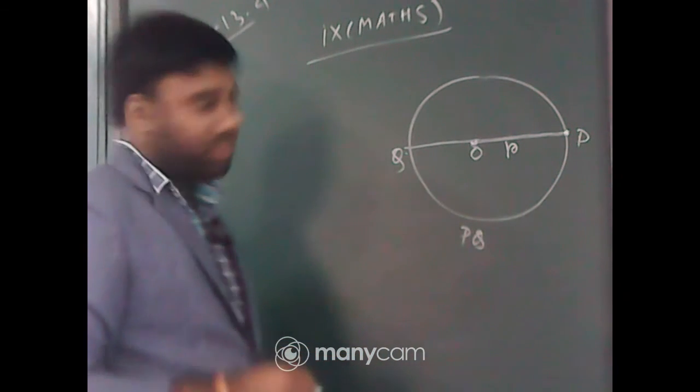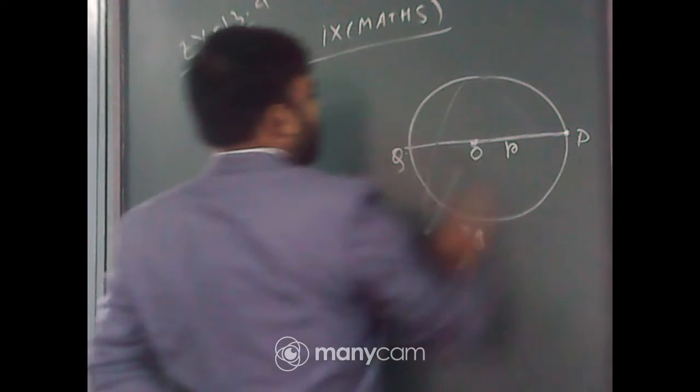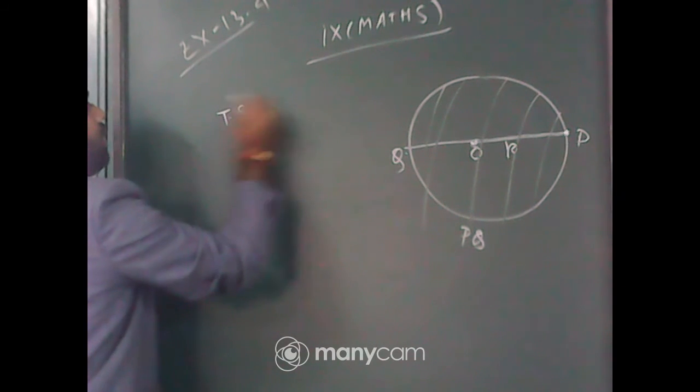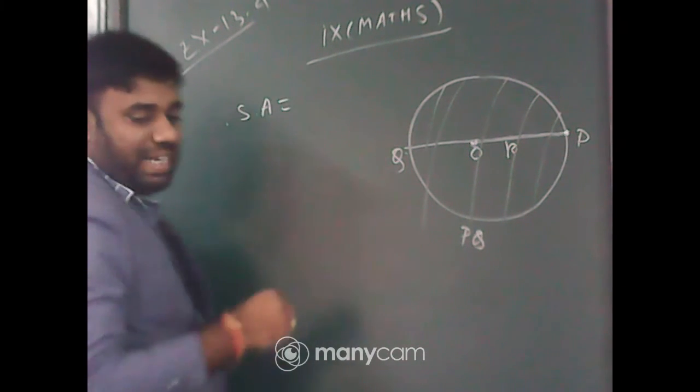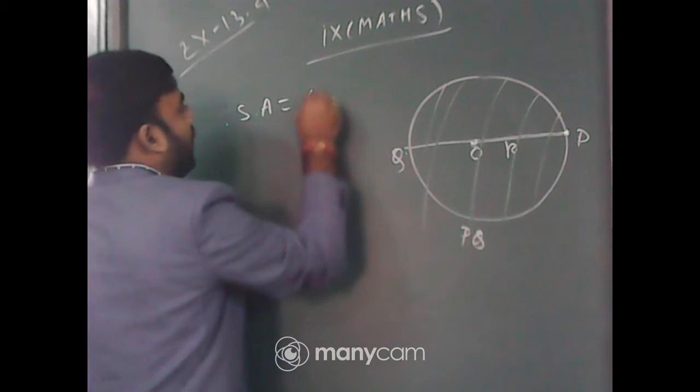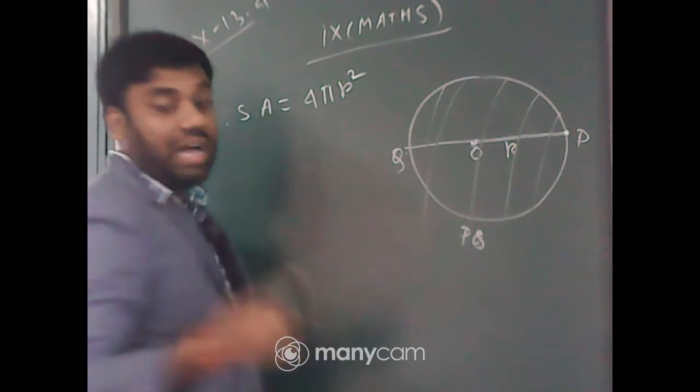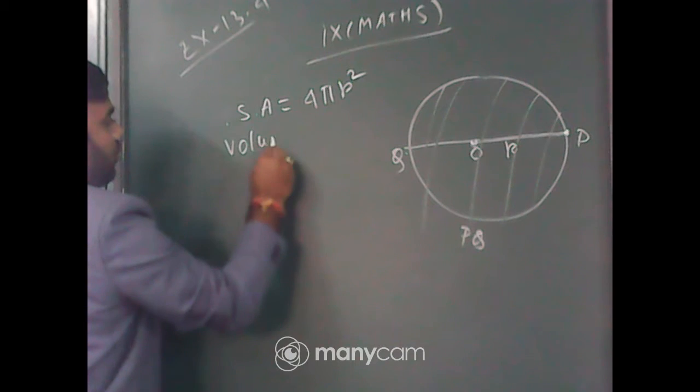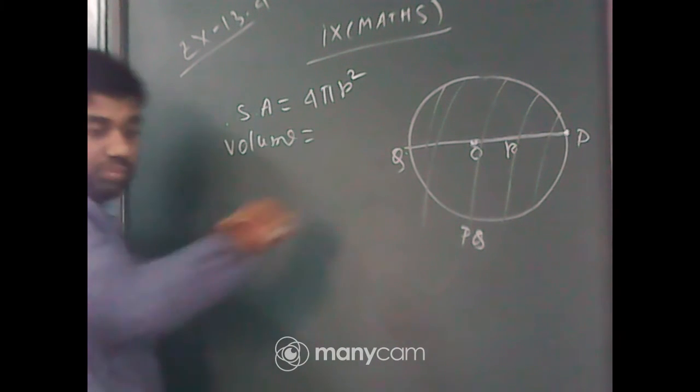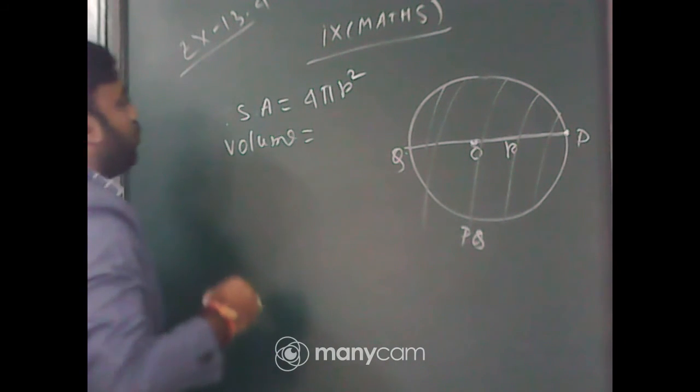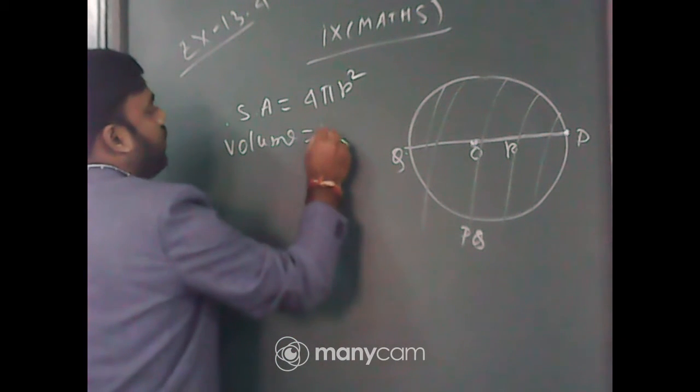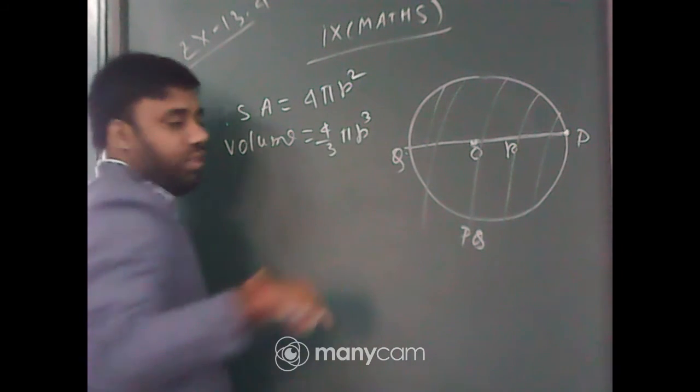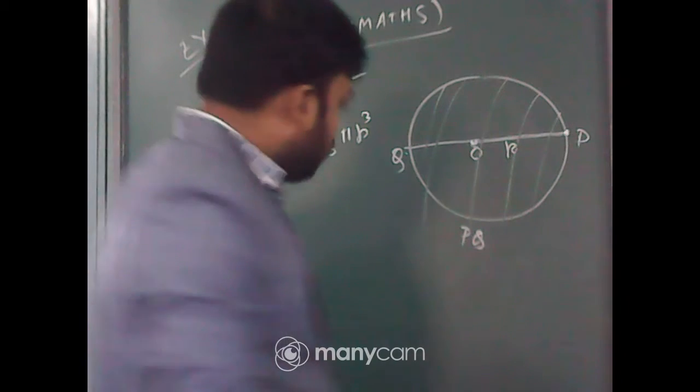Now, surface area means, that is TSA. It is very easy formula, that is 4 pi R square. What is R? R is the radius of the sphere. What is the volume? Volume equal to 4 third pi R cube, very good.